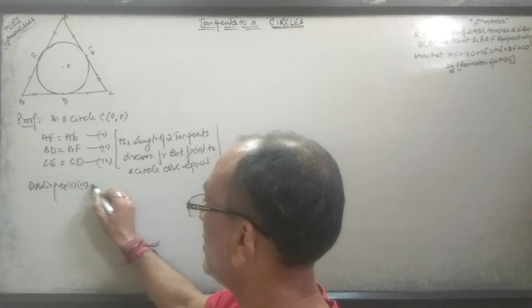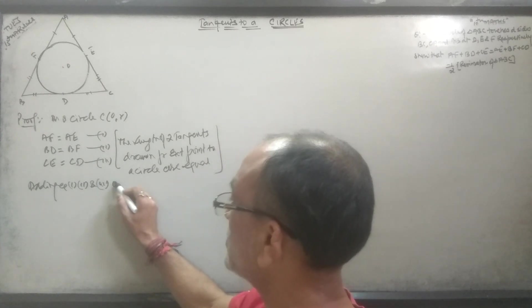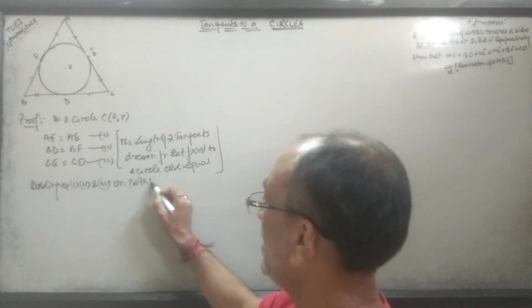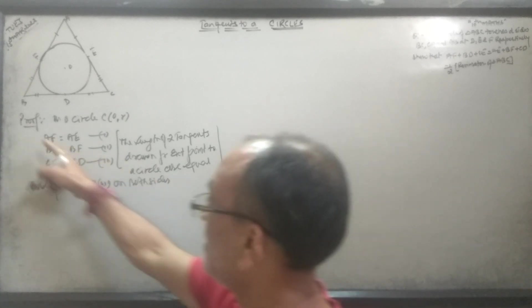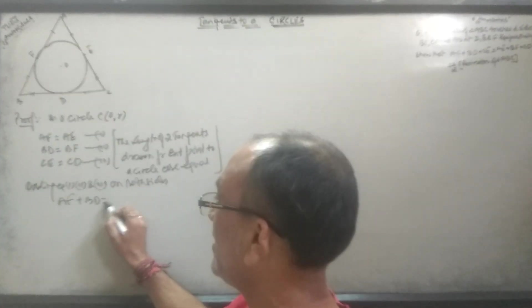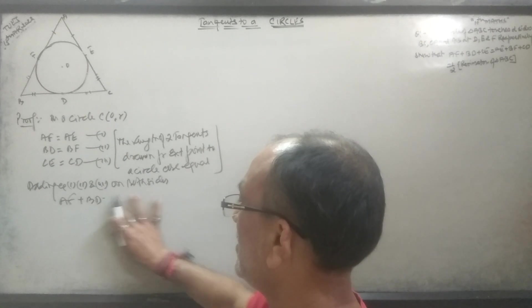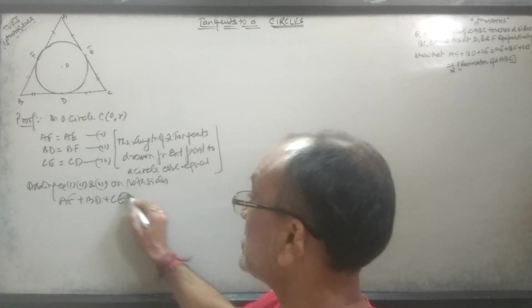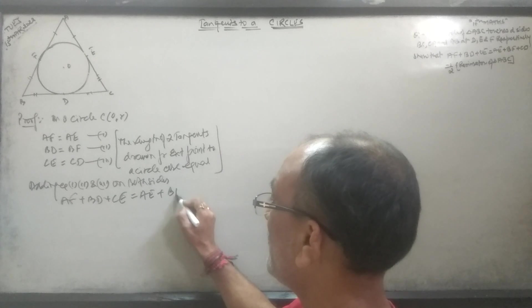On the left side we have AE plus BF plus CD. On the right side we have AF plus BD plus CE.